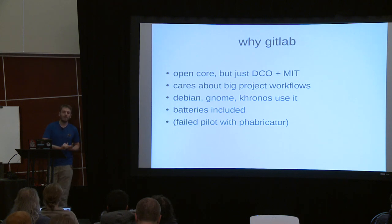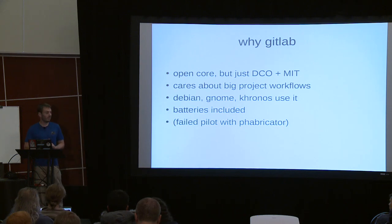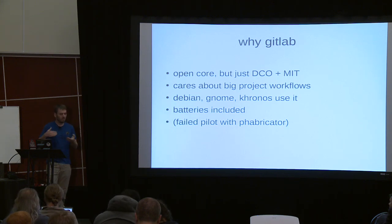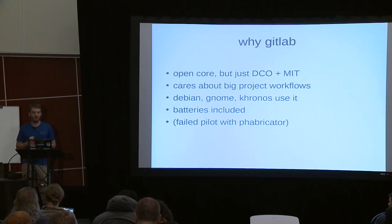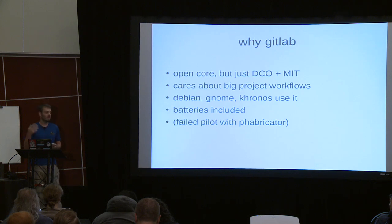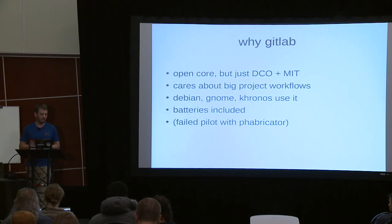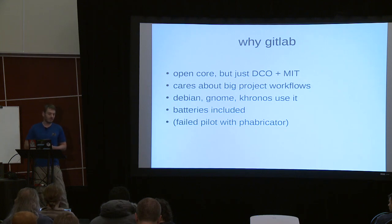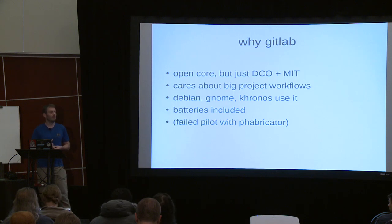Another thing is GitLab cares about big project workflows. Debian has adopted it, GNOME has used it, and we have quite a bit of overlap with GNOME people. Khronos — the OpenGL and Vulkan standards body — is using GitLab, so all the GL and Vulkan people are used to it. We're hoping it will be a lot easier to learn for new contributors. It also means that if GitLab the company ever goes evil, there are enough people who really use the open-source core to sustain it going forward.